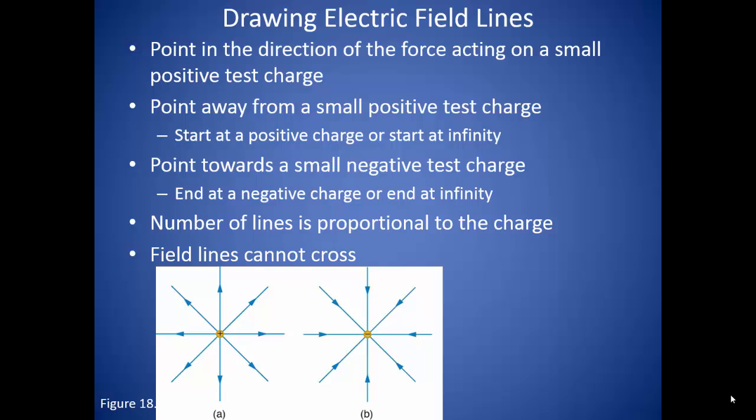If we were to take that same small positive test charge and put it into field B, where there is a negative charge creating the electric field, that small positive test charge would feel a force pulling it towards the negative charge. So our electric field lines would be drawn showing the force moving towards the negative charge.